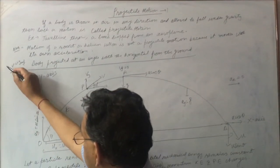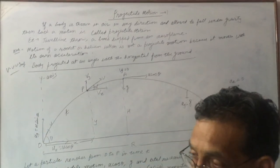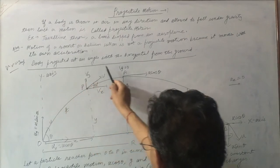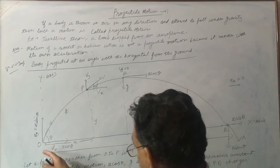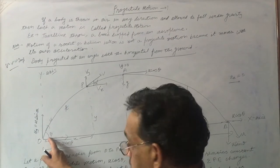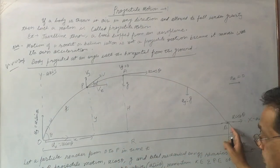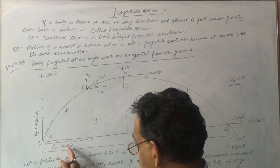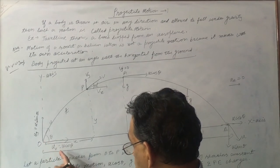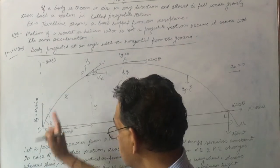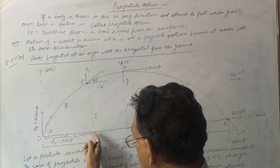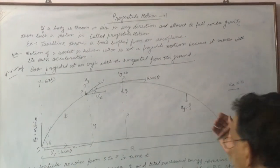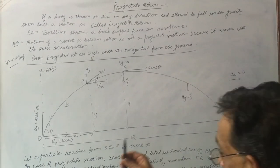Now a very important derivation — most important question asked in all exams. For a body projected at an angle theta with the horizontal, the horizontal component is u cos θ (x-axis) and the vertical component is u sin θ (y-axis).